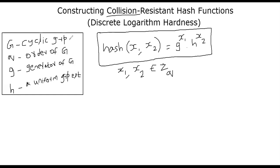Suppose you are given a cyclic group G, and the order of the group is q. Assume q is also a prime number, and g is the group generator. And you are having a uniform group element h. I will show you how you can generate h in a moment.